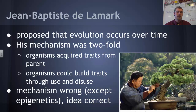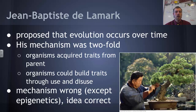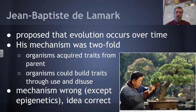Finally, we've got Jean-Baptiste de Lamarck, who proposed that evolution occurs over time. However, his mechanism was slightly different from Darwin's. His mechanism was twofold: organisms acquired traits from their parents, and those traits could be built up through use or disuse. His idea was that if you've got a blacksmith using a big hammer, he's going to develop large muscles and be able to pass those traits on to his offspring — who would have larger muscles because of the blacksmith's built-up physique. This is not true.